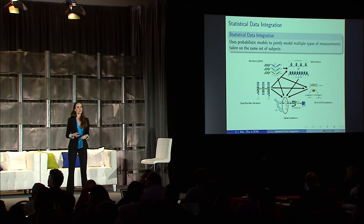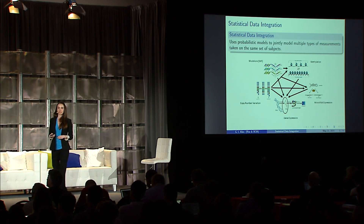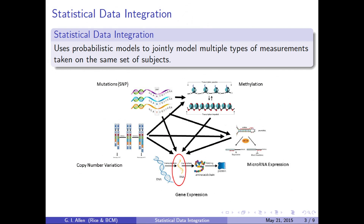This is an area that I call statistical data integration. I define this as using some type of probabilistic model to jointly model multiple types of measurements taken on the same set of subjects. The Cancer Genome Atlas data is a perfect example of where we want to do joint inference — we know that all these types of molecular profiles obtained on tumor samples are part of a big complex molecular system that gives rise to cancer cells.